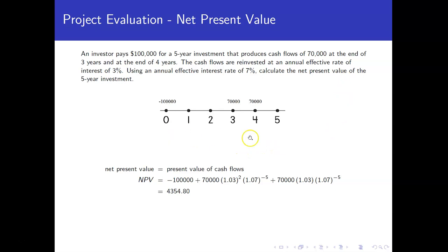So we have a time diagram here when the cash flows are going to occur. The hundred thousand dollars is the initial outlay, so this is an outflow, a cash outflow, which is why we consider it negative. We're paying the hundred thousand dollars to invest in the project.